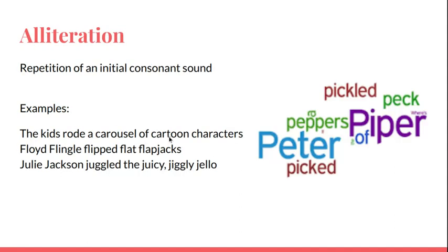Alliteration is the repetition of an initial consonant sound. Vowels are A, E, I, O, U. Consonants are all the other letters. So, the kids wrote a carousel of cartoon characters — you're repeating that K sound.